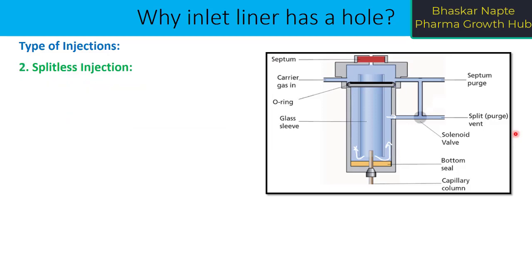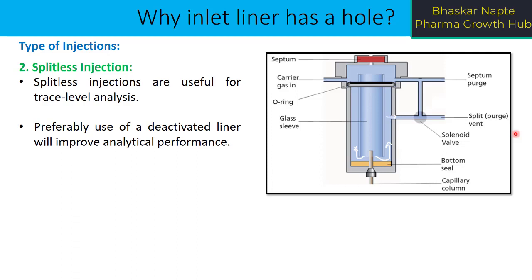The second type is splitless injection. Splitless injection is generally used for trace level analysis where sample concentration is low. Preferably, use of a deactivated liner will improve analytical performance. In splitless injection, your sample is going to get in contact with the bottom seal, as you can see in the diagram. Once the splitless injection gets completed, the split vent opens up and whatever solvent vapors are present in the liner get vented out through the split vent.